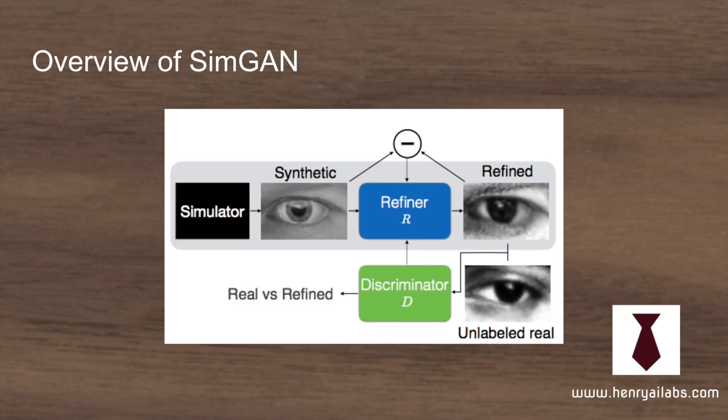This is the overview of the SimGAN idea. You take a black box simulator, which is a graphics engine like Unreal or Unity, and you produce these synthetic images from it. Then you use a GAN framework to have the generator refine the synthetic images so they are more closely resembling the real image dataset.